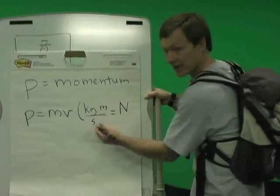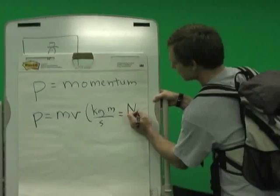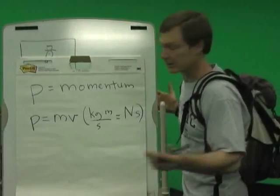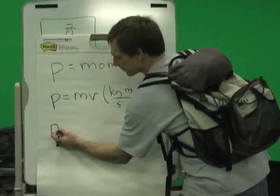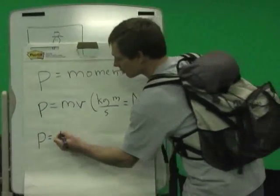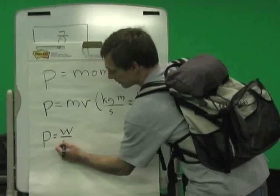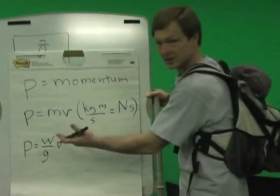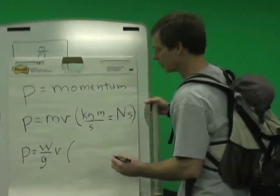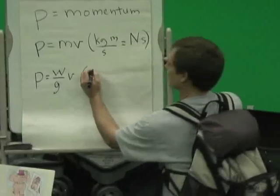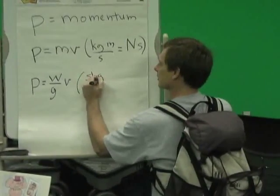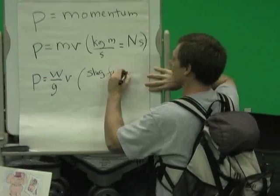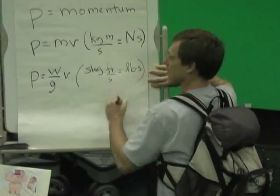A kilogram meter per second — if you multiply it by seconds over seconds, you get newtons times seconds. Now in English units, we get weight, so we have momentum. It's still mass, but we're given weight, and so we take weight divided by the acceleration of gravity and multiply by velocity. The units are the Pacific Northwest favorite — slugs times velocity, feet per second — and that's the same as a pound second.